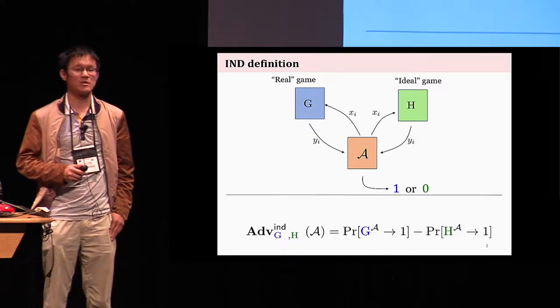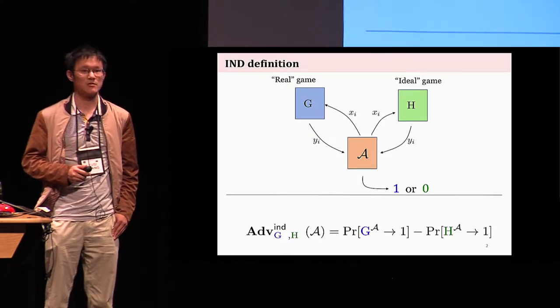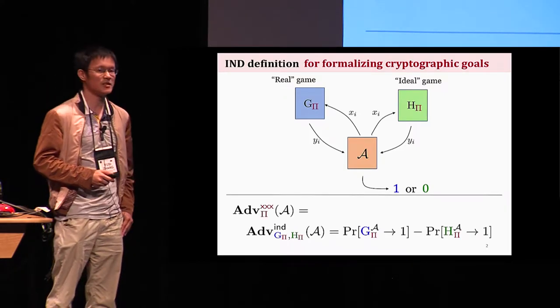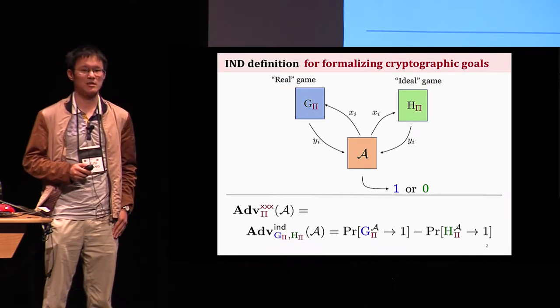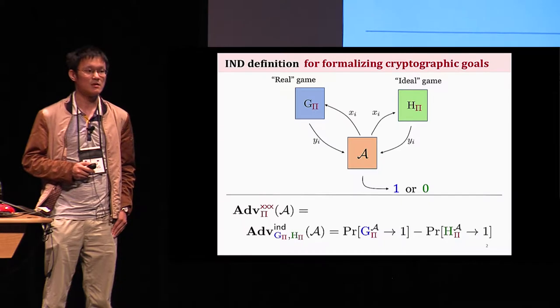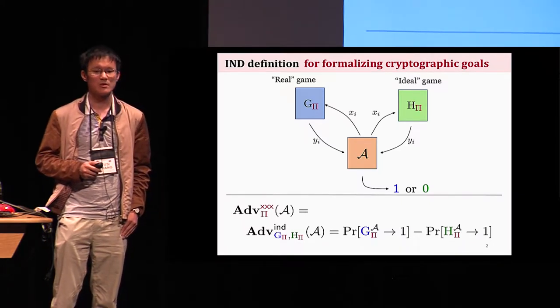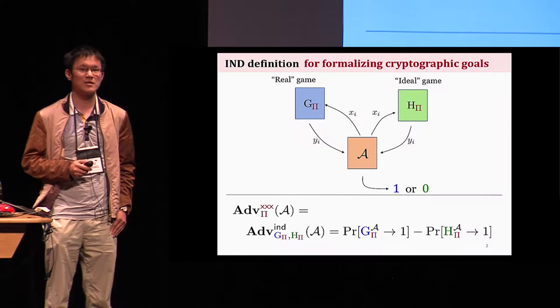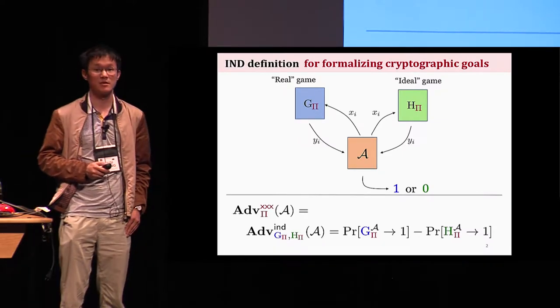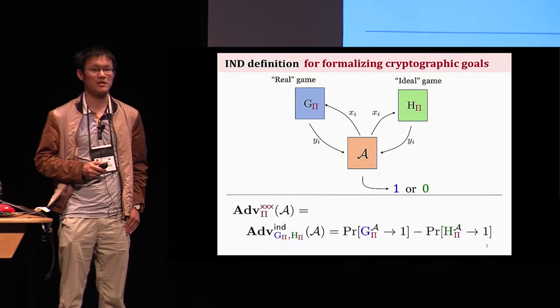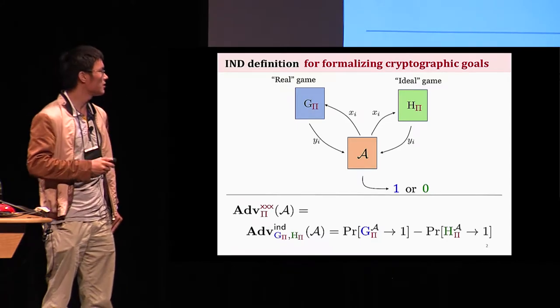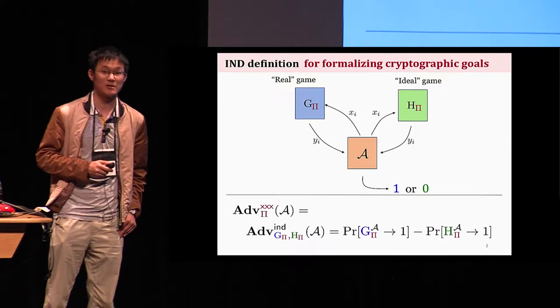But what I want to emphasize is that indistinguishability won't be so useful and so important in our field if this slide is all what it's about. If you go through the literature, most of the definitional work uses indistinguishability in the following way. The games G and H are really constructed in such a way that it depends on some crypto schemes pi. Throughout this talk, I'm going to call this way of defining security as the conventional way.